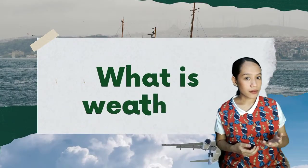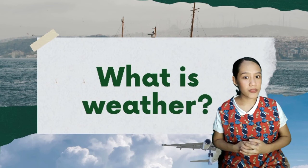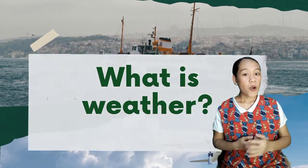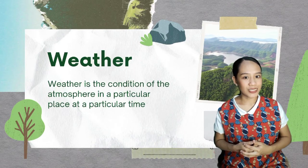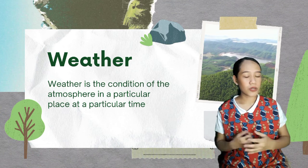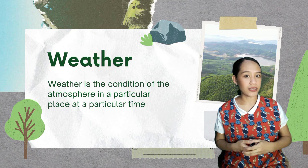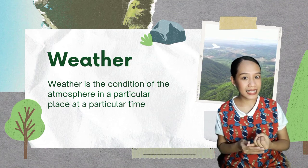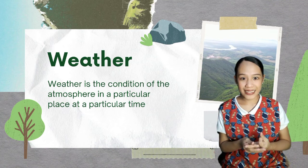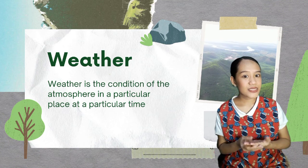Our daily routines are greatly affected by what type of weather we have on a certain day. Before anything else, let us recall some important terms. First, what is weather? Weather is the condition of the atmosphere in a particular place at a particular time. The different types of weather we had in our activity are: sunny day, cloudy day, rainy day, windy day, and stormy day.